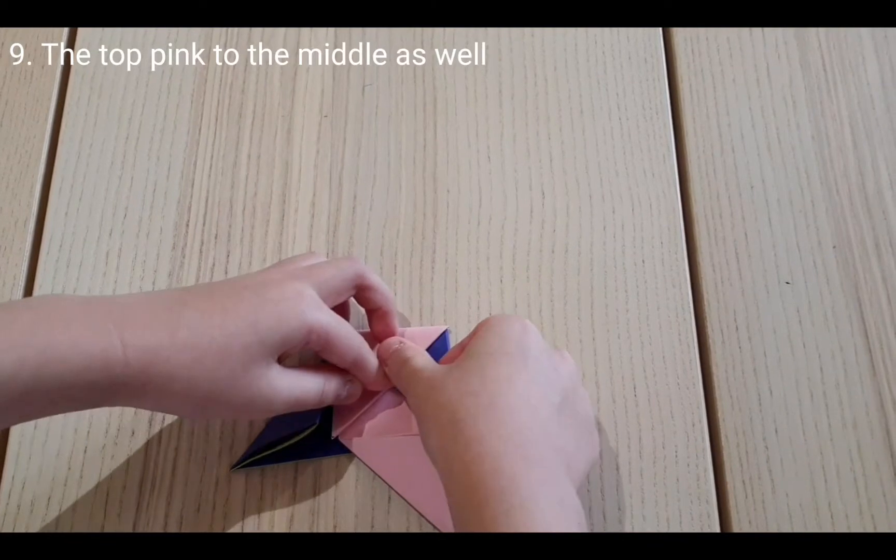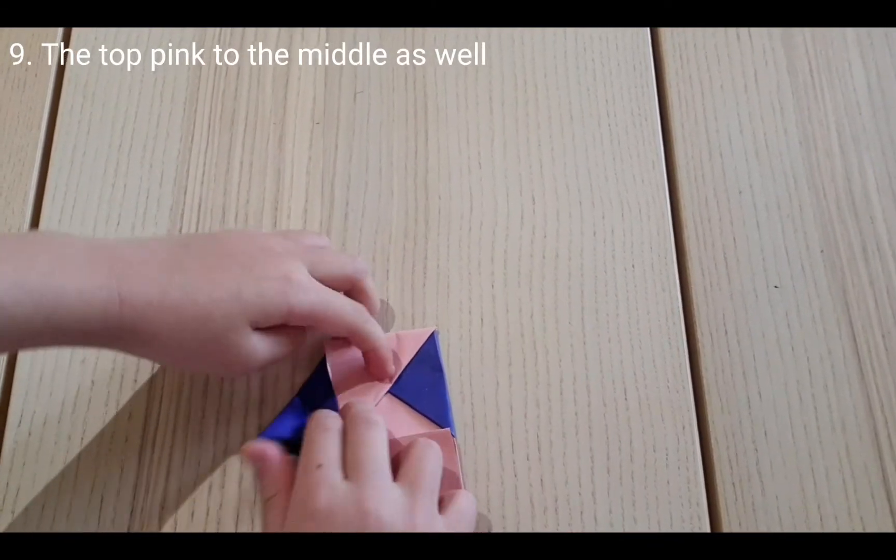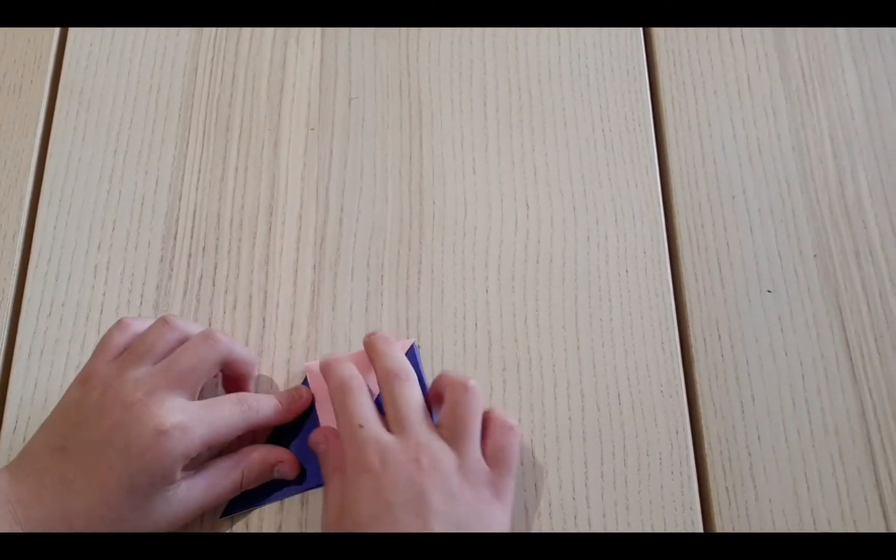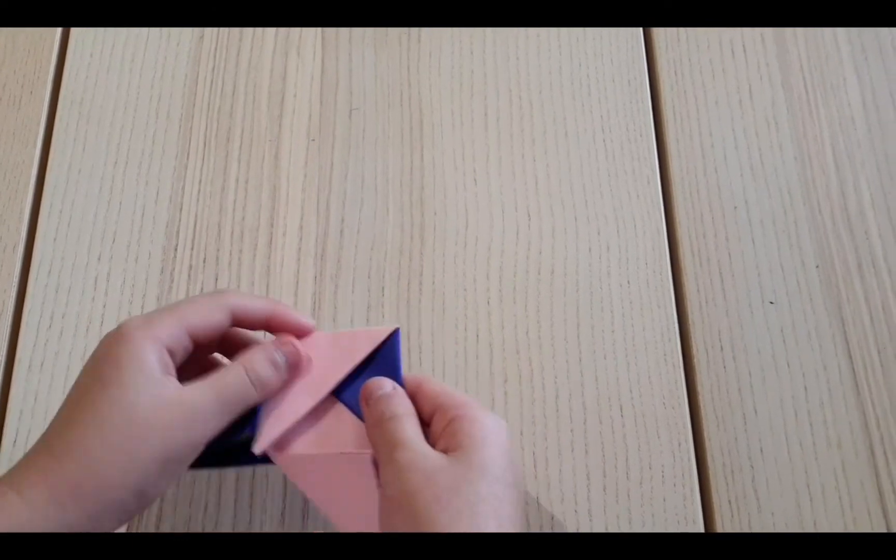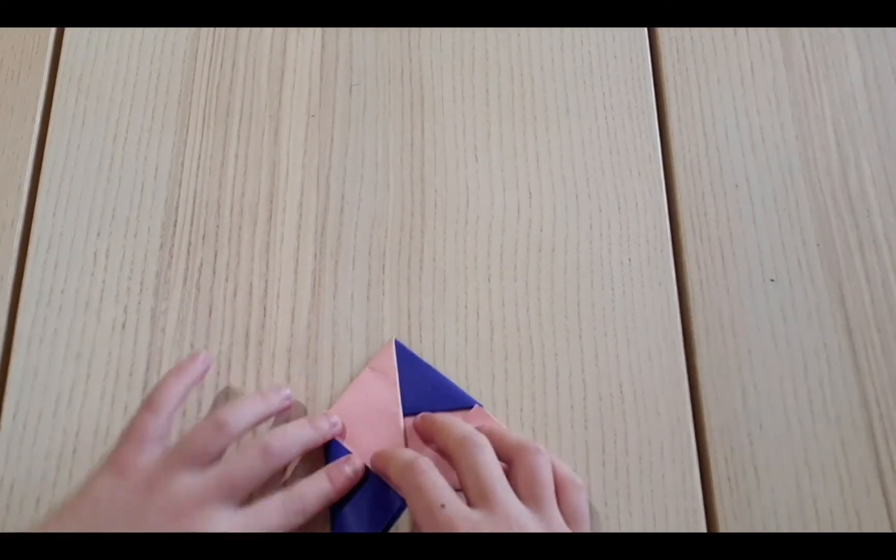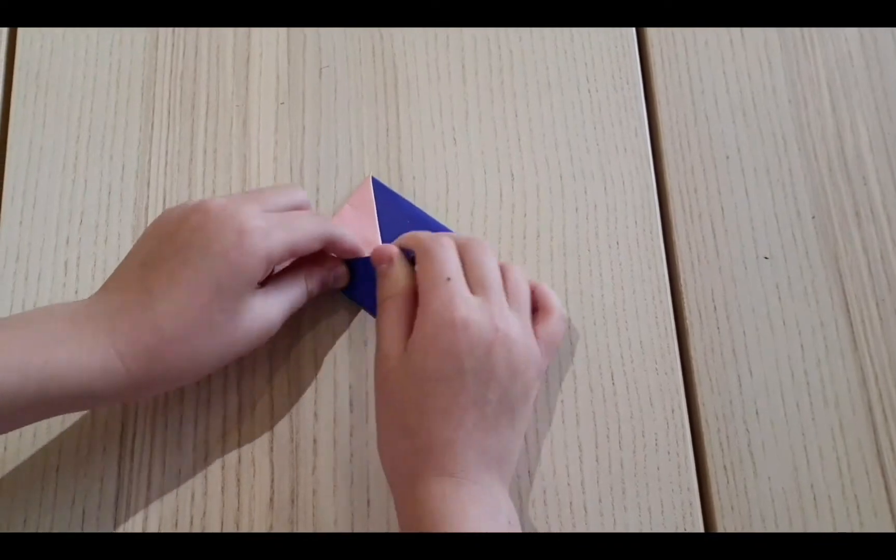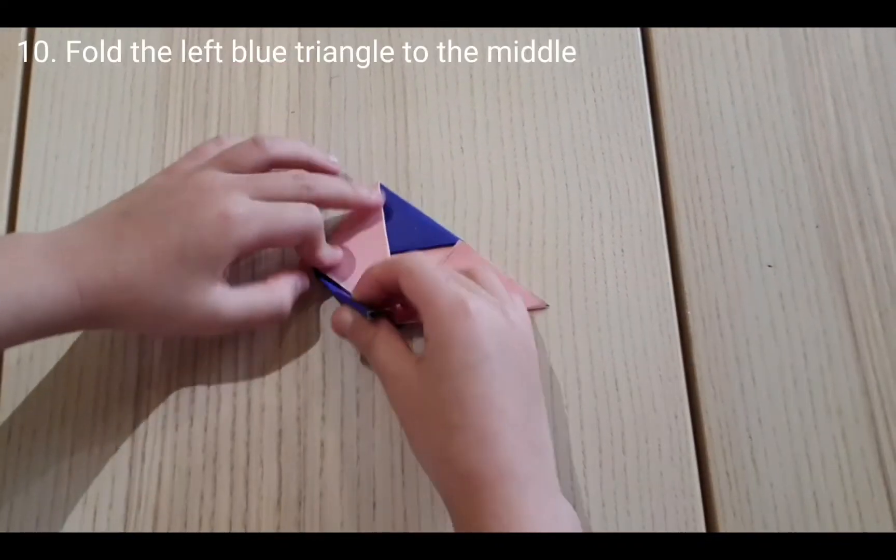So fold the right blue triangle to the middle, the up pink triangle to the middle, the left blue triangle to the middle too. As you can see, it's starting to form like a pattern.